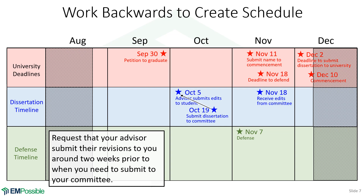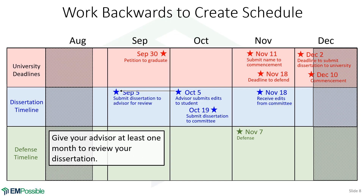Before you submit your dissertation to your committee, you need to give it to your advisor first to do a first pass through it. You probably want to receive edits from your advisor at least two weeks before you submit it to your committee, so you have time to make those revisions. I recommend giving your advisor at least one month with a complete rough draft to go through it in detail and mark anything that needs to be revised. Notice that pushes things back all the way to September 5th where you need a complete dissertation — very close to the beginning of the semester.